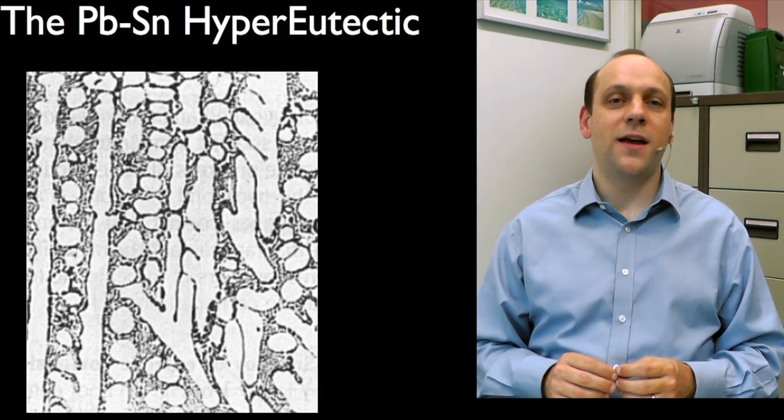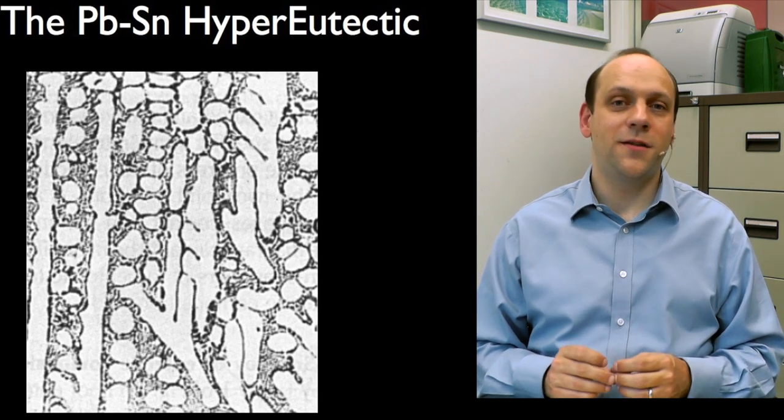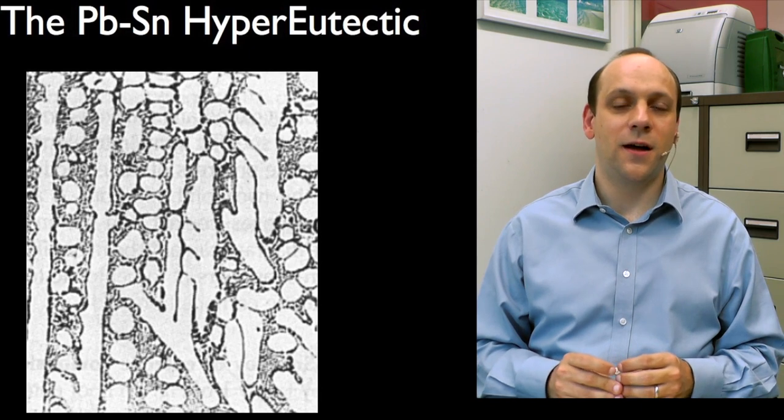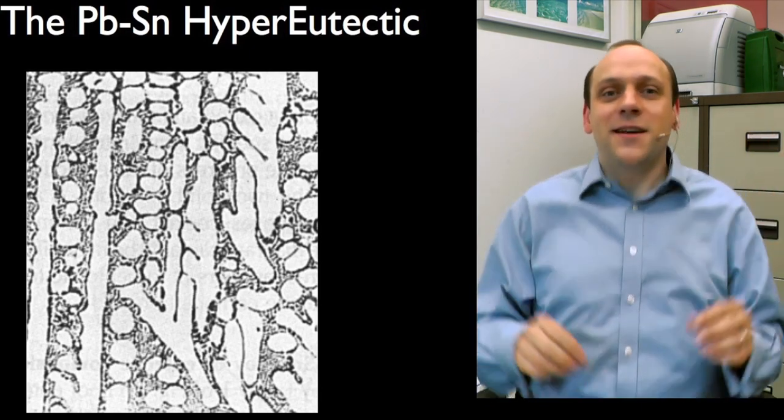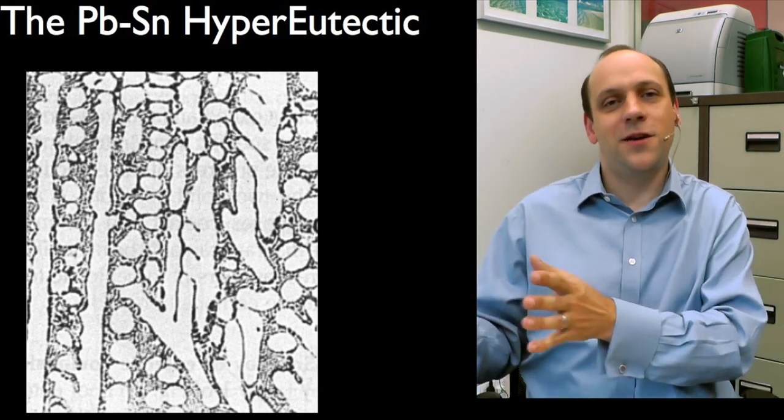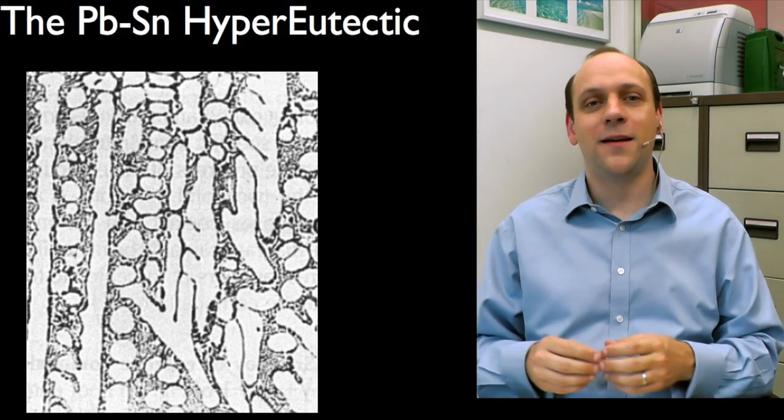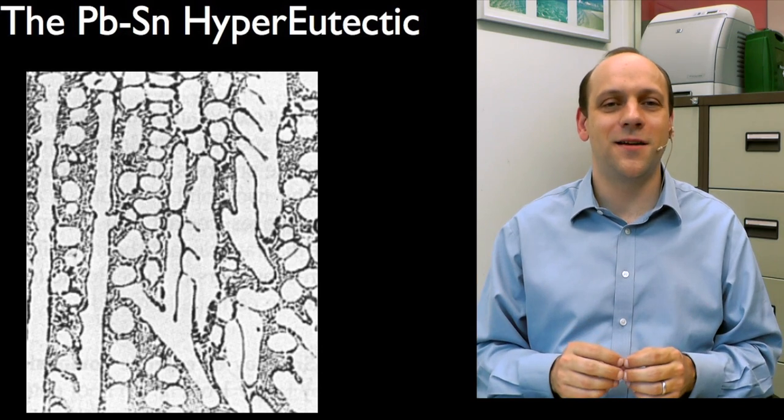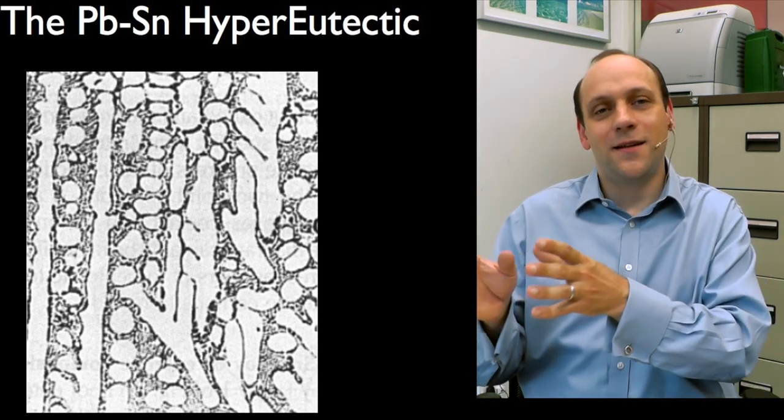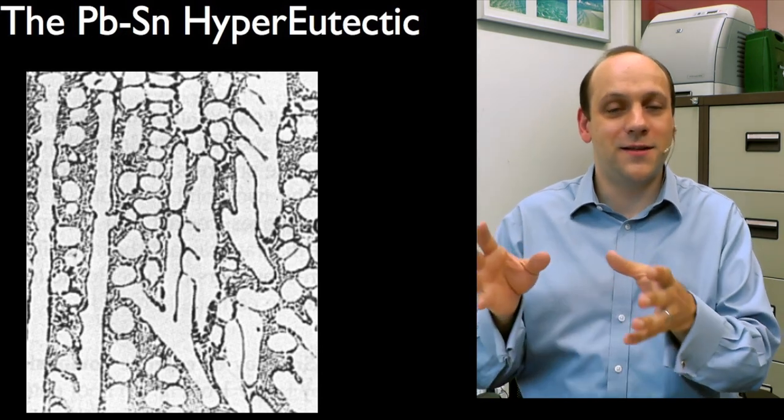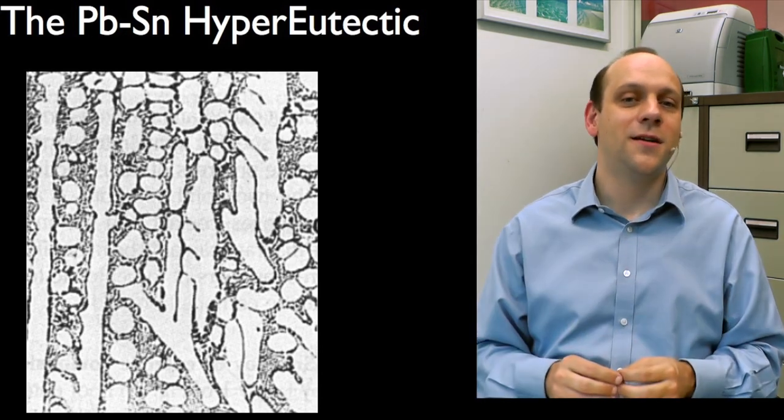Here's an example of a lead-tin hyper-eutectic. So that's one which is to the right of the eutectic temperature. This one is hyper, that is, it's all energetic. So hyper is all energetic, so it's more. So this is hyper-eutectic. It's got more tin. So it's hyper-eutectic. So there's lots of white phase. This is a tin-rich situation.